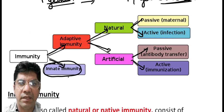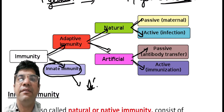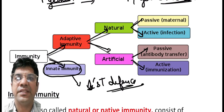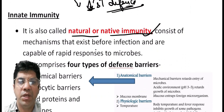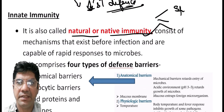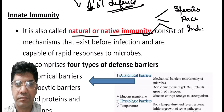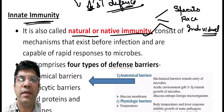Innate immunity is also known as natural or native immunity. It can be considered at different levels including species, races, or individual. Innate immunity consists of four types of defense barriers: anatomical barriers, phagocytic barriers, blood proteins, and cytokines.